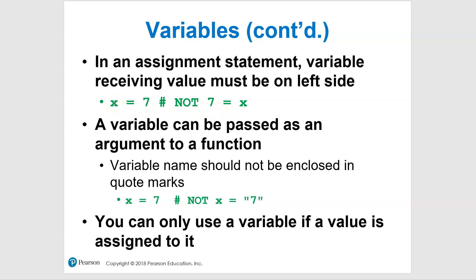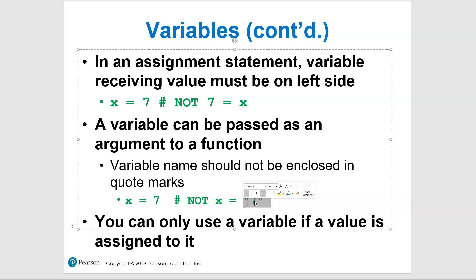A variable can be passed as an argument to a function, but do not enclose variable names in quote marks. The reason is that quotes turn them into a string. For example, x equals 7 is totally fine, but x equals quote-seven-quote makes it a string, not a number.